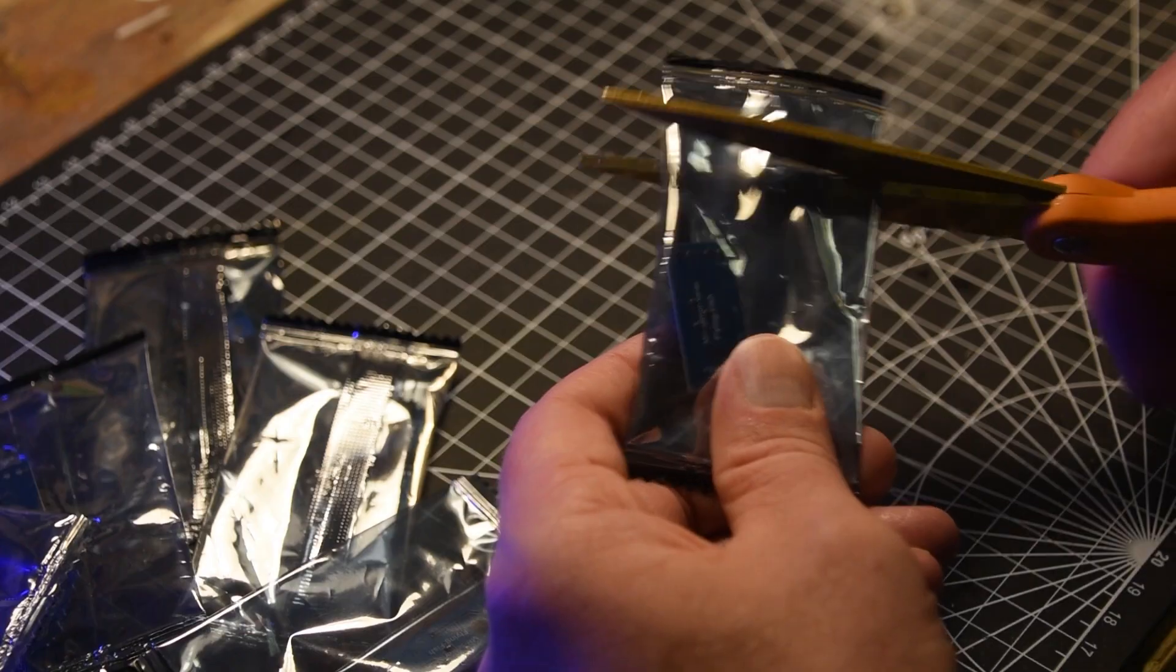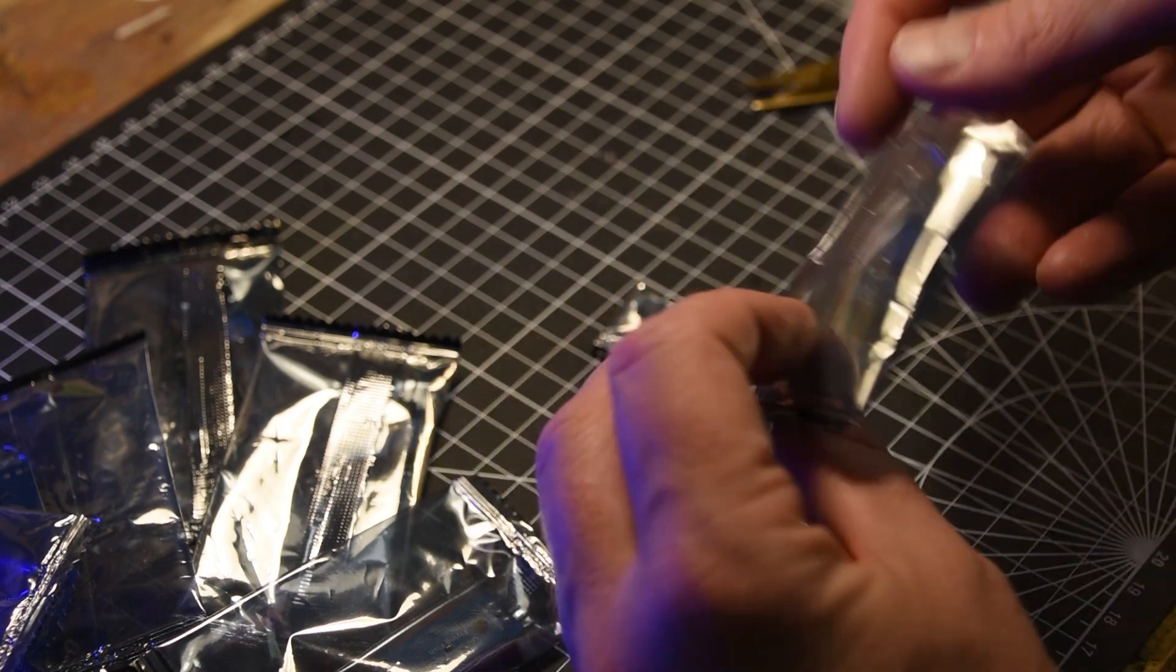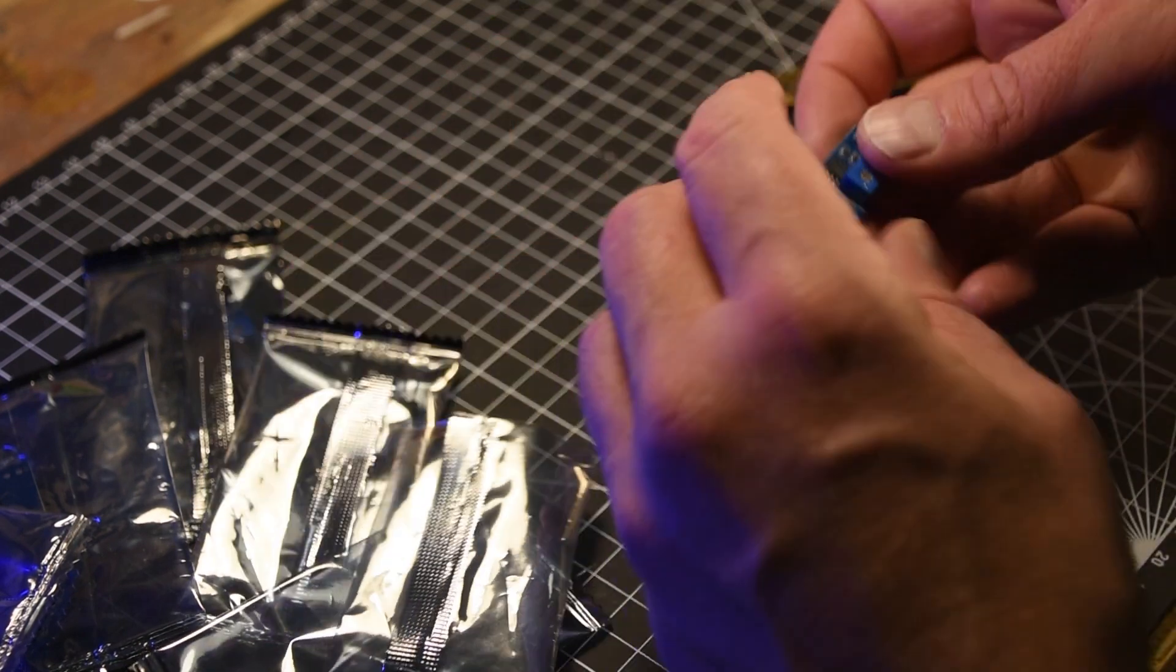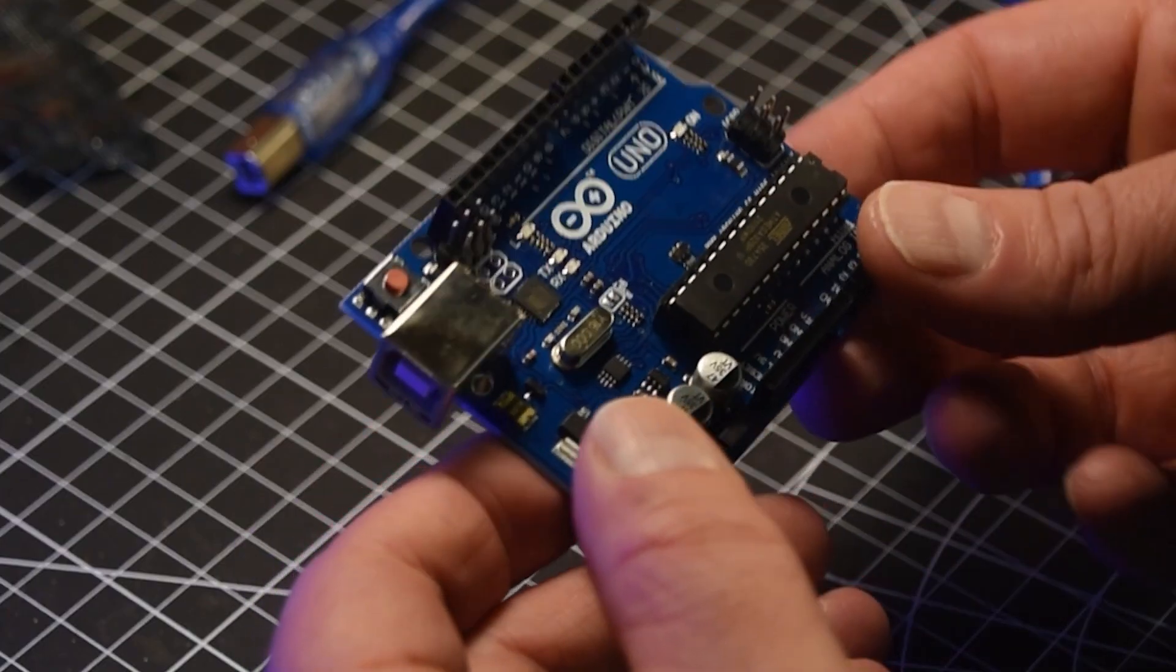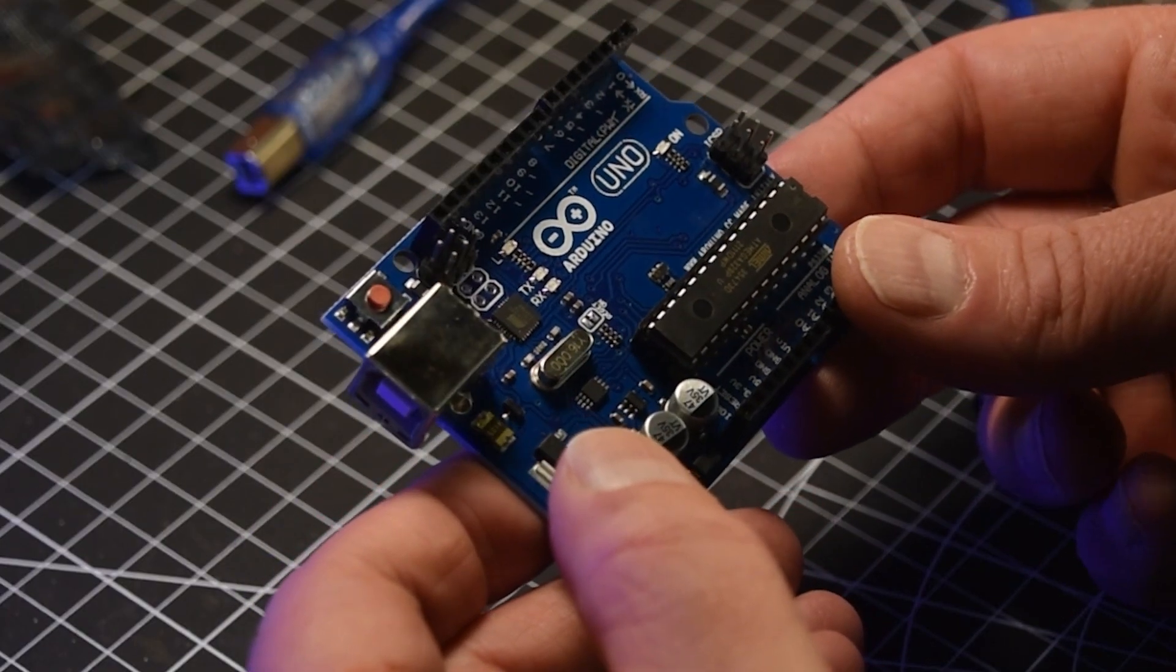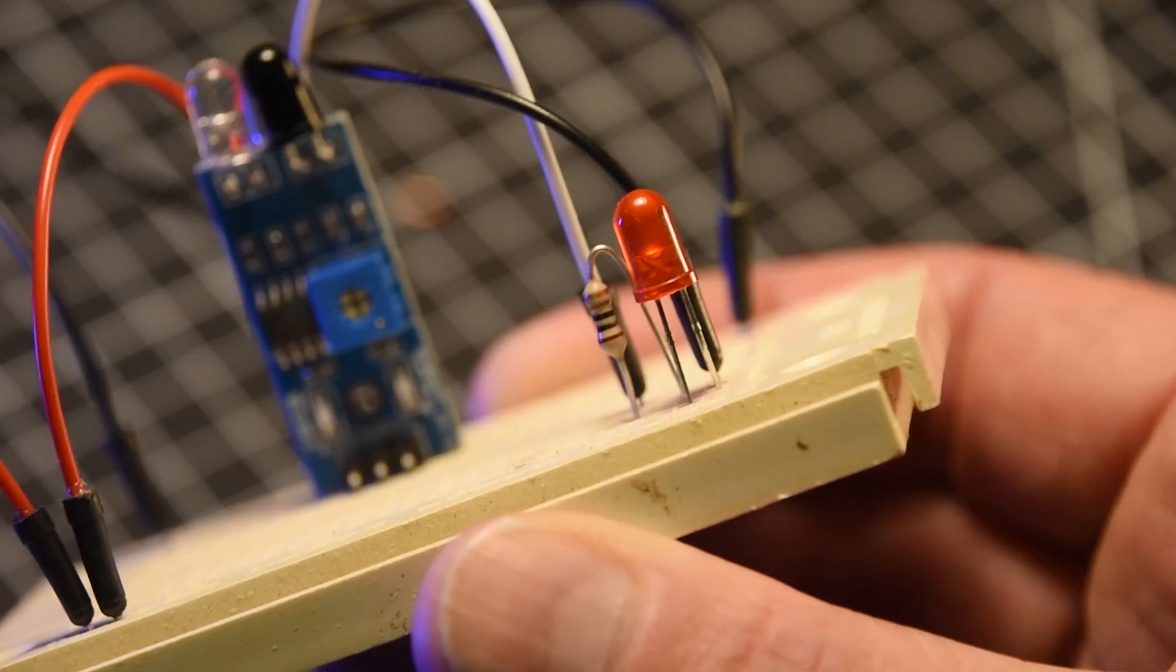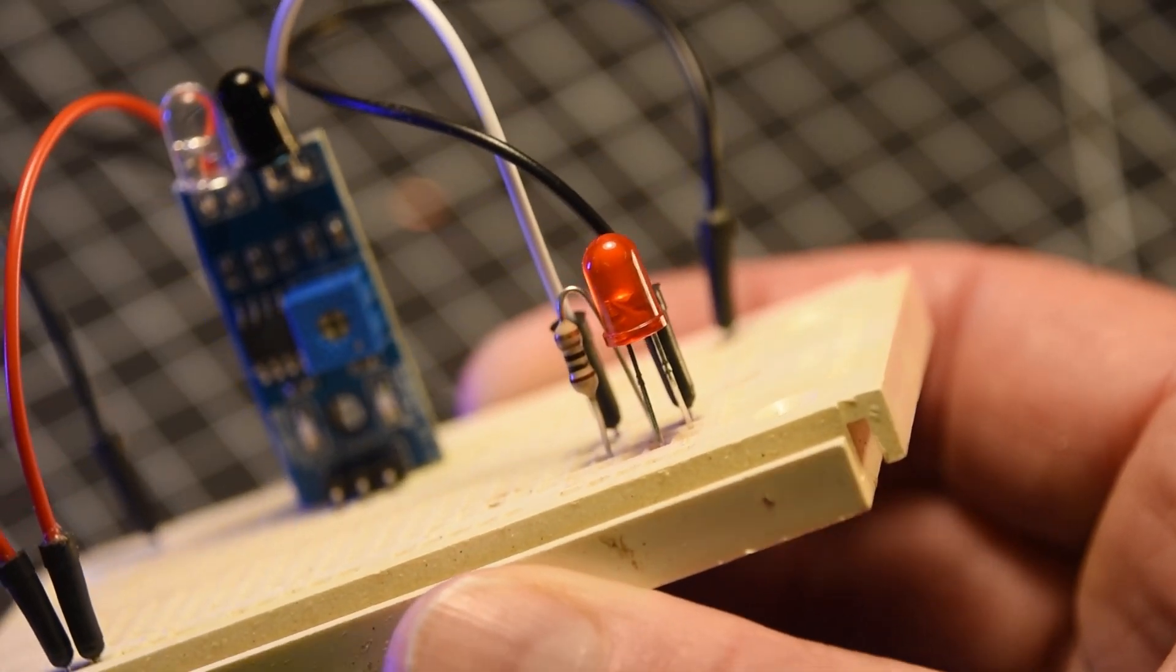There are many fantastic Arduino tutorials online, so I'm not going to go in depth of how I built my detection system, but I will take a brief look at the components and my approach. I used an Arduino controller, IR detectors, LEDs, and resistors for my block detection circuits.